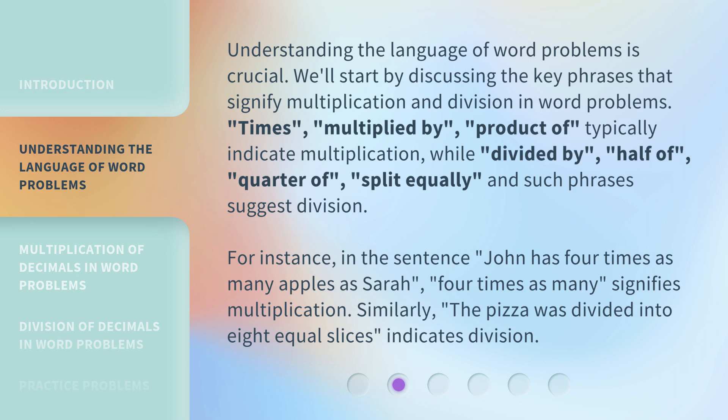For instance, in the sentence 'John has four times as many apples as Sarah,' 'four times as many' signifies multiplication. Similarly, 'the pizza was divided into eight equal slices' indicates division.